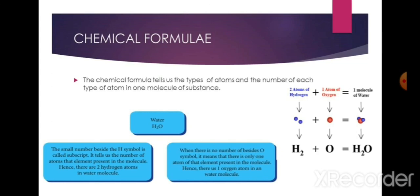There are two hydrogen atoms in a water molecule. When there is no number beside an element's symbol, it means there is only one atom of that element present in the molecule. Hence, there is one oxygen atom in a water molecule.